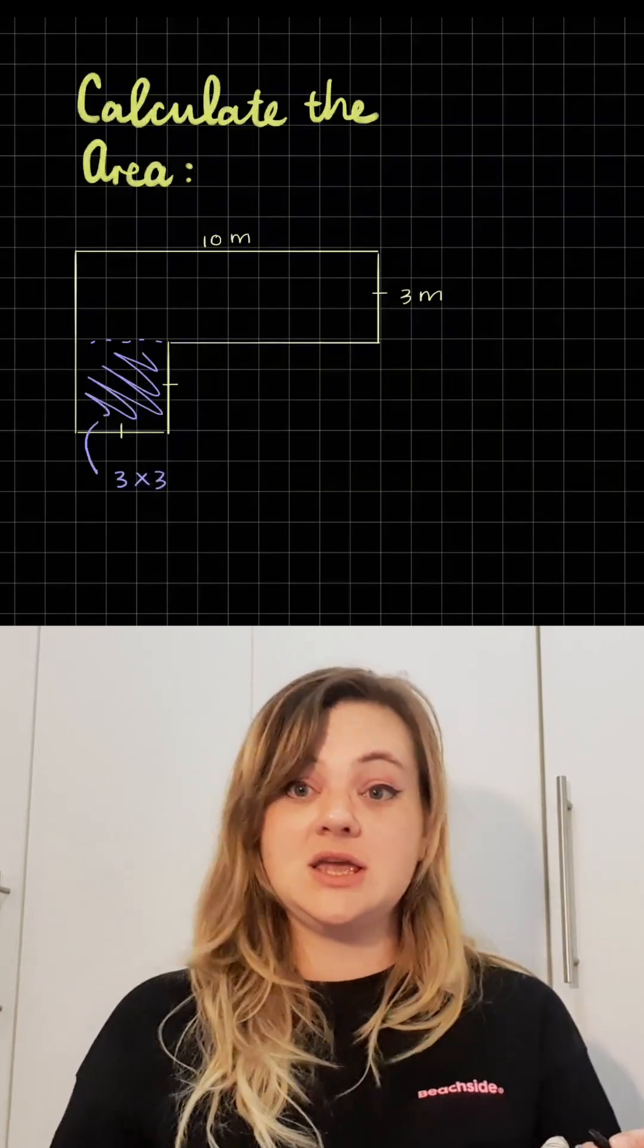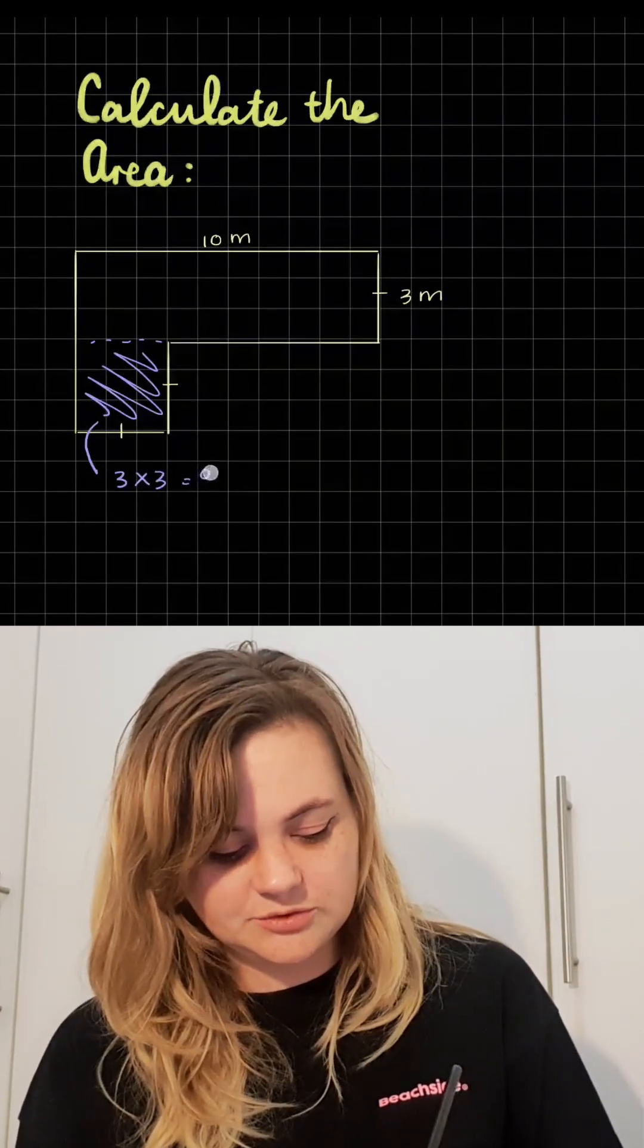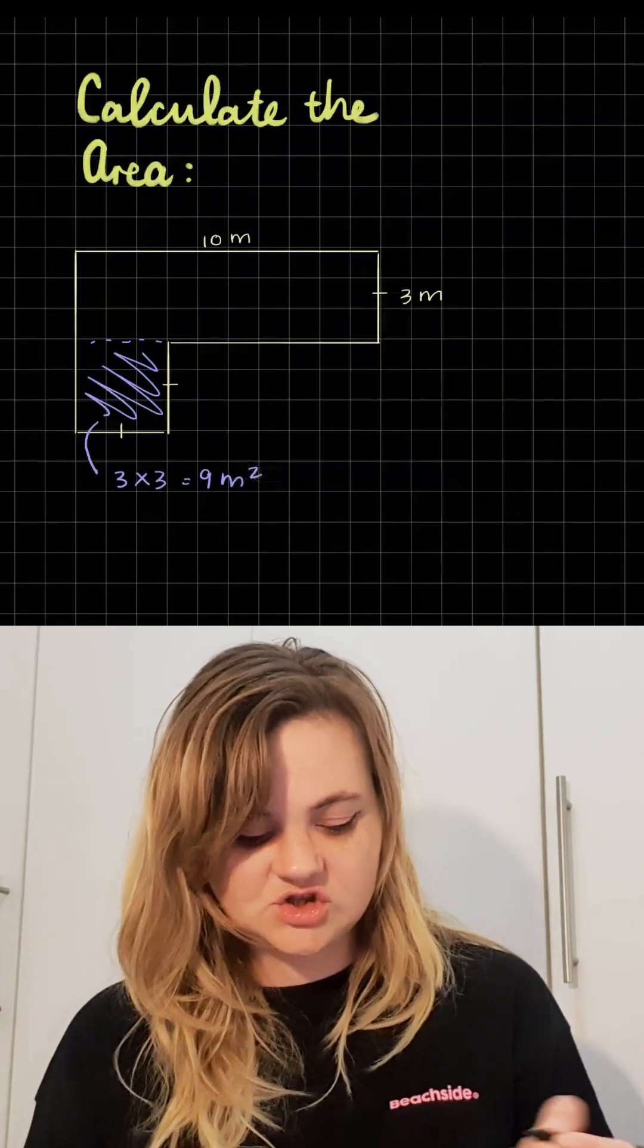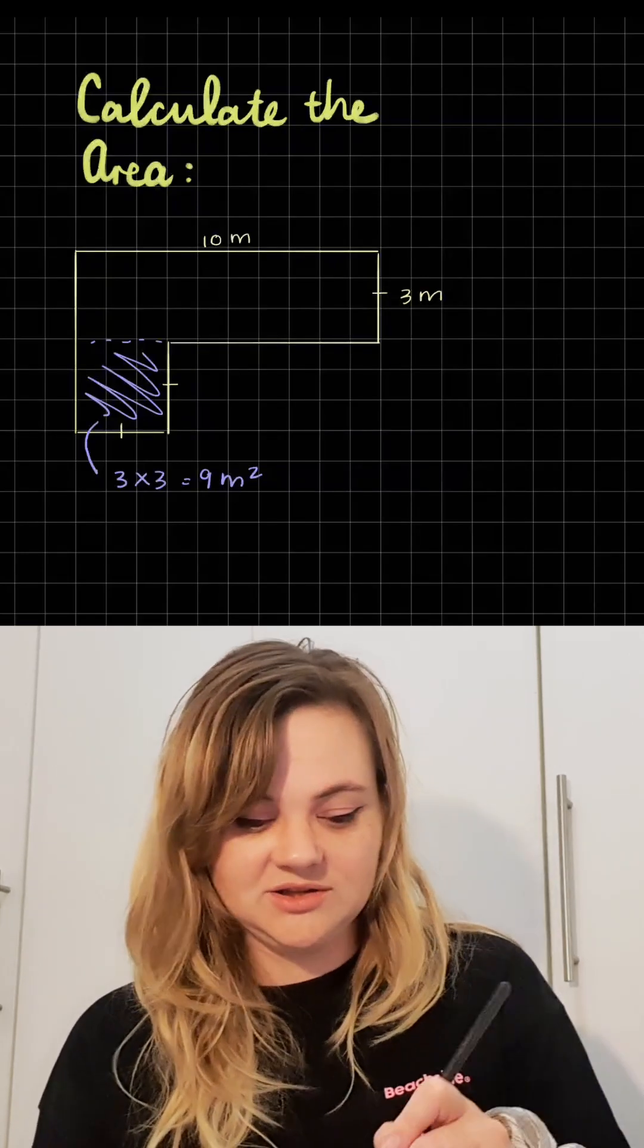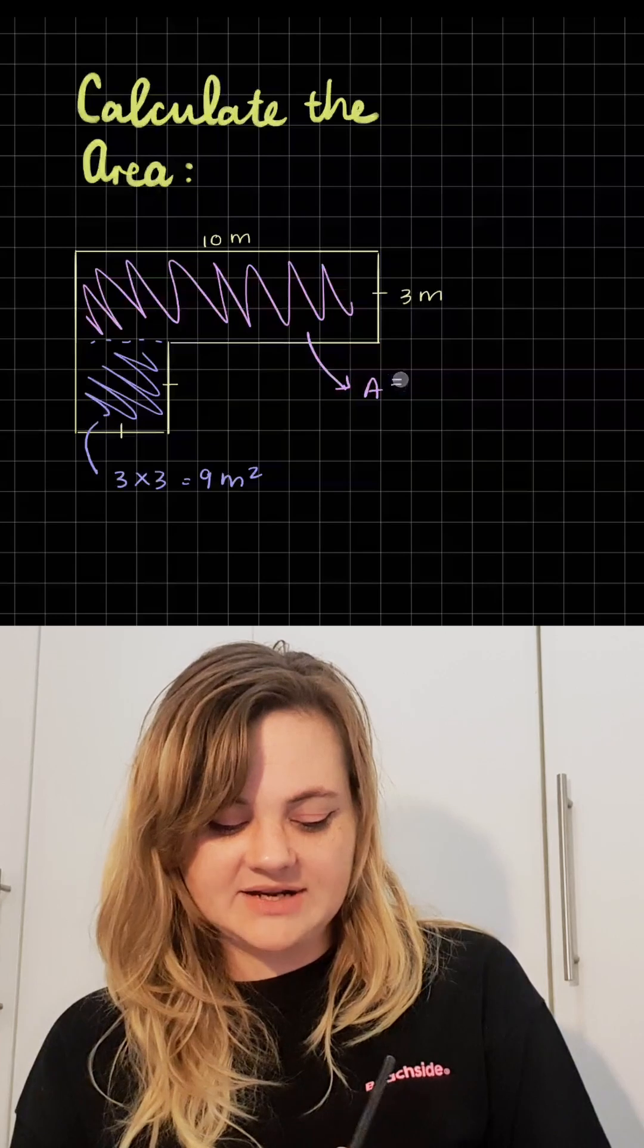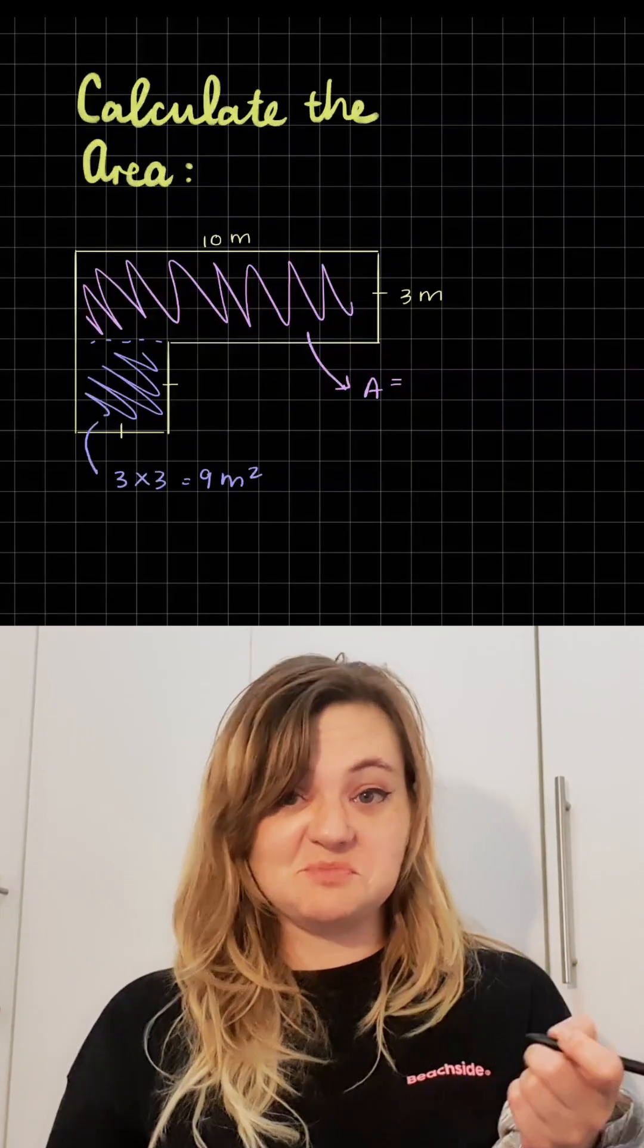So for this part we will say three times three, which is equal to nine meters squared. Now let's calculate the area of the rectangle as well. And the area of a rectangle is length times breadth.